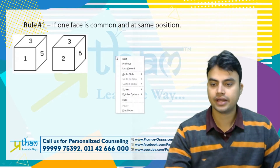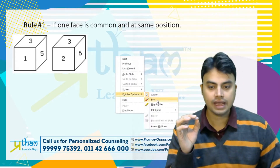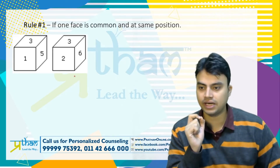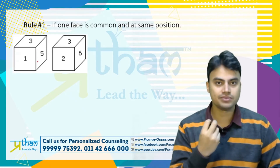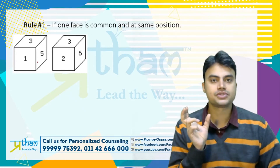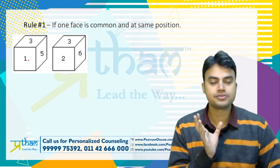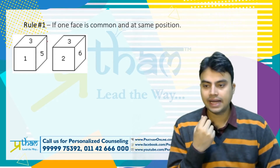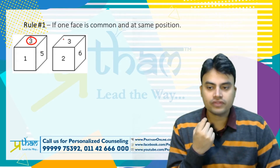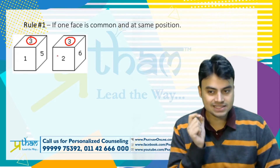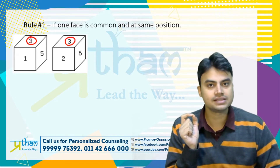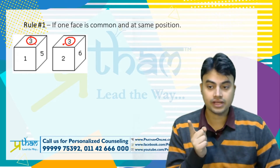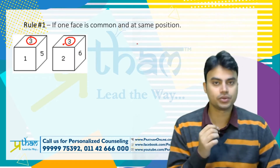Rule number one says: if one face is common and at the same position in any two figures, then apply this rule. For example, a die was rolled two times and two different faces were captured. I can see that three is common in both figures, and the position of three is also the same — it is at the top in both. If three were at different positions in the two figures, this rule would not apply.